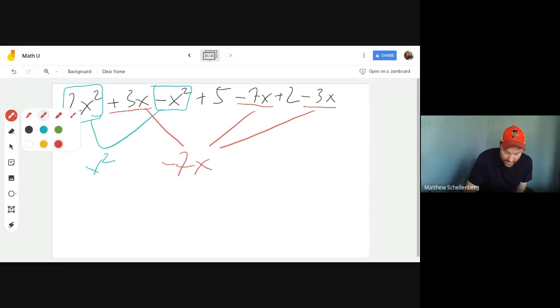And then finally, I have some constants. So this right here is plus 5. And this is plus 2. And those things just become plus 7. So your final answer on simplifying this one would be this right here.